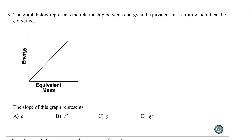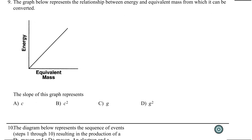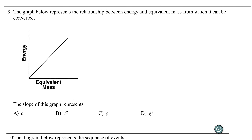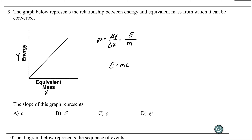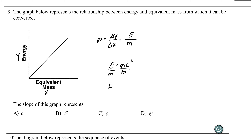Number nine: a graph shows the relationship between energy and equivalent mass. The slope of this graph represents what? Slope is rise over run — delta Y over delta X — so in this case it's the change in energy over the change in mass, or E over M. From E equals MC squared, dividing both sides by M gives E over M equals C squared. So the slope of the energy-versus-mass graph is equivalent to C squared — choice B.